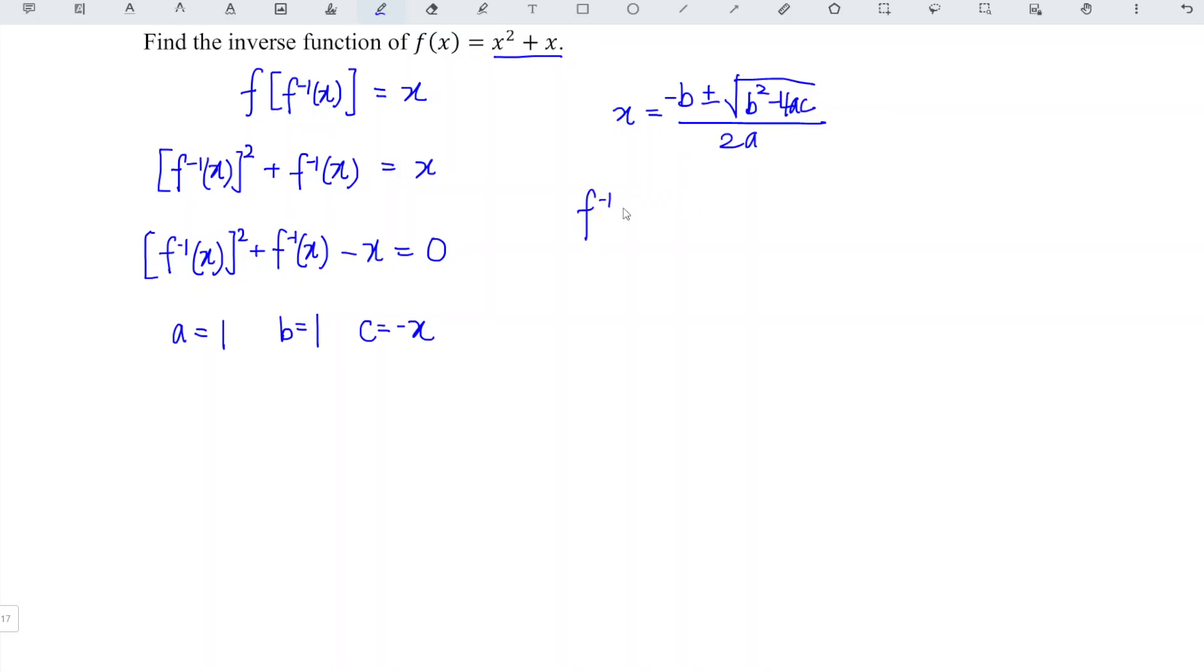Which means that the inverse is equal to minus 1 plus minus square root of 1 square minus 4 times 1 times minus x, divided by 2 times 1.